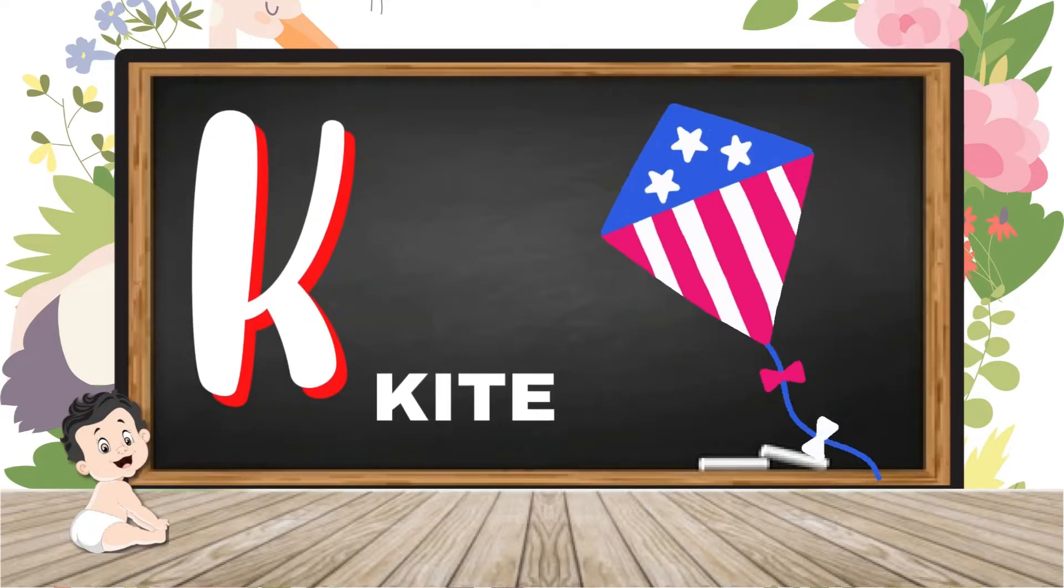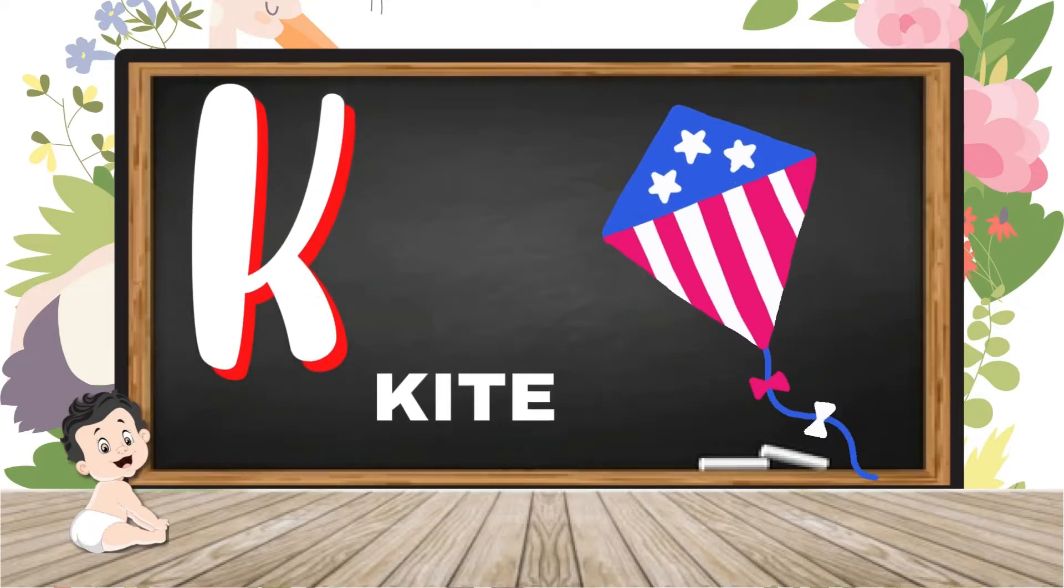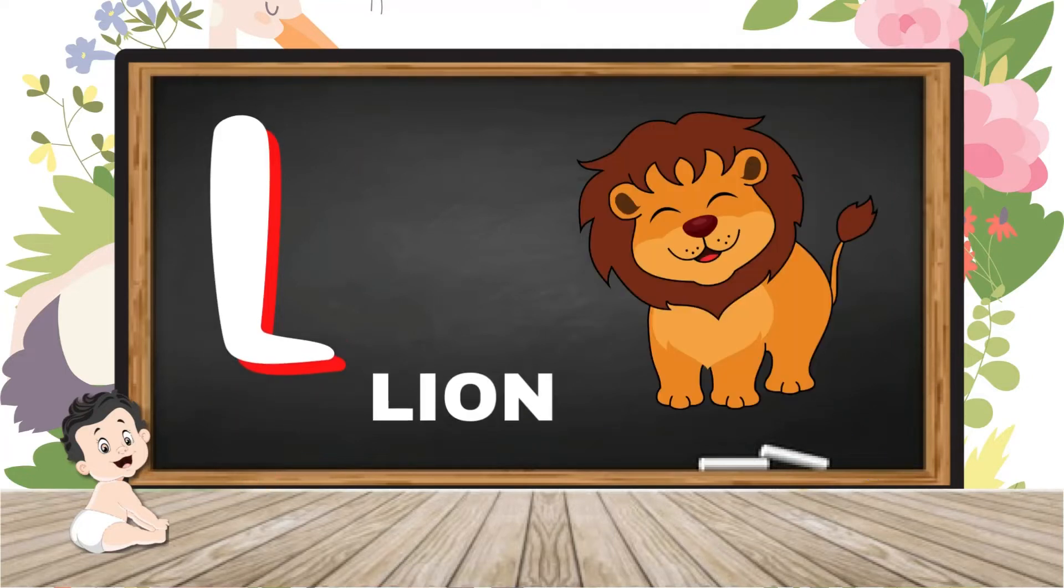K for kite, cat, petang. L for lion, lion, share.